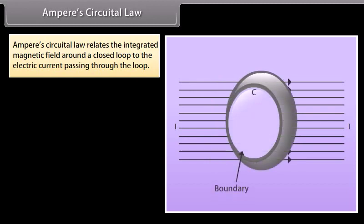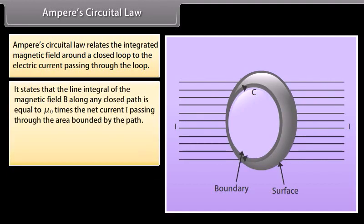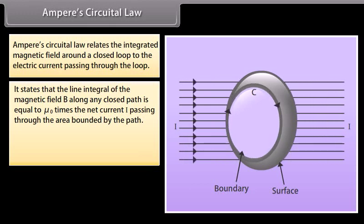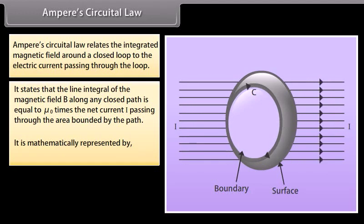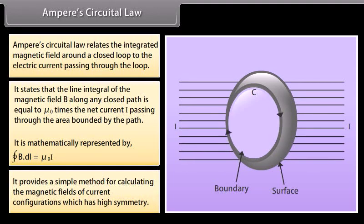Ampere's Circuital Law relates the integrated magnetic field around a closed loop to the electric current passing through the loop. It states that the line integral of the magnetic field B along any closed path is equal to mu_0 times the net current I passing through the area bounded by the path. Mathematically: closed integral of B dot dL equals mu_0 I. It provides a simple method for calculating the magnetic fields of current configurations which have high symmetry.